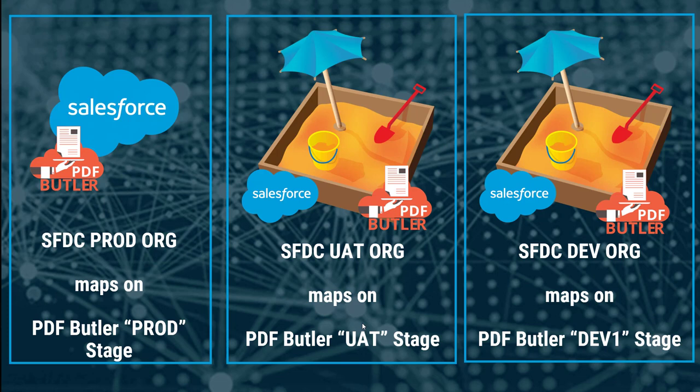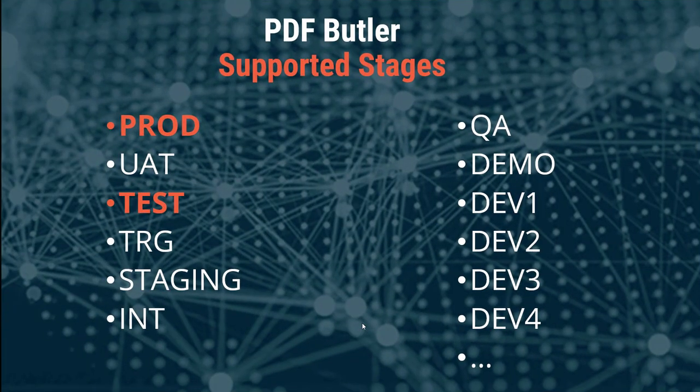but every other org you can choose which stage it will link to. Every stage is actually a copy of the document configuration where you can make your updates, do your tests, and run and change them as required. You can have a lot of different stages with PDFButter — we support up to 20, so you can have up to 20 different sandboxes and parallel projects going on in your environment.